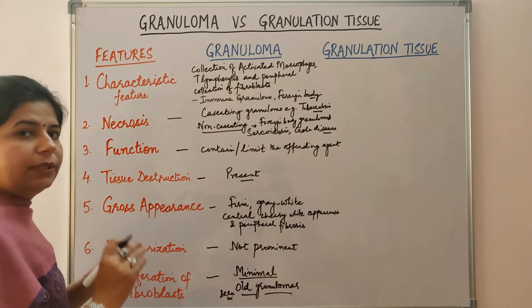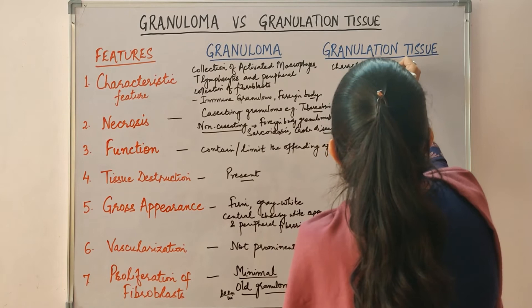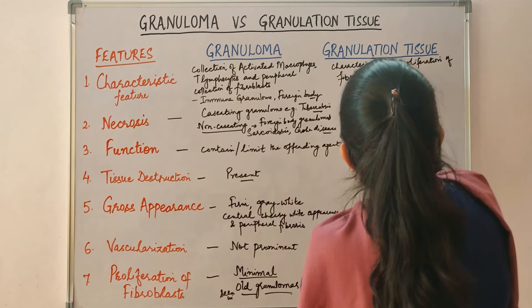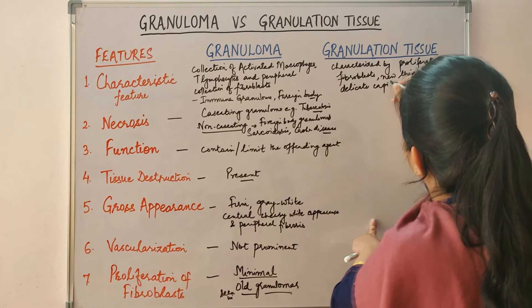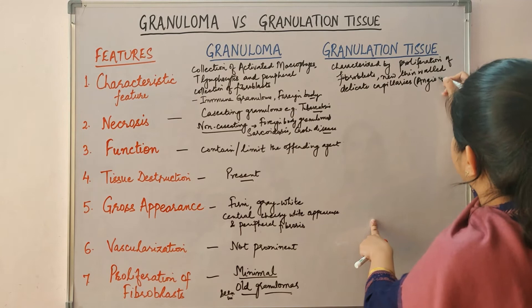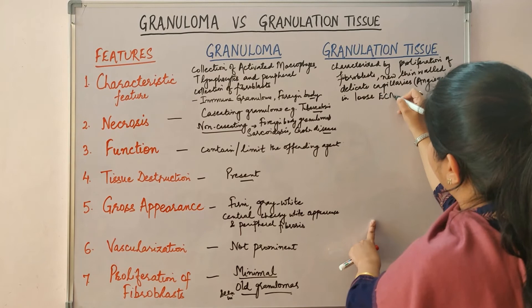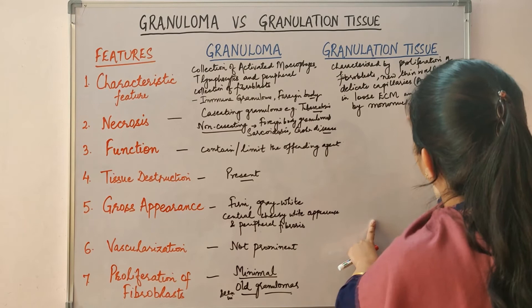Now coming on to granulation tissue. Granulation tissue is characterized by proliferation of fibroblasts, new thin-walled delicate capillaries — this is called angiogenesis. The proliferation of fibroblasts and angiogenesis is occurring in a loose or edematous extracellular matrix, and there is infiltration by mononuclear cells.